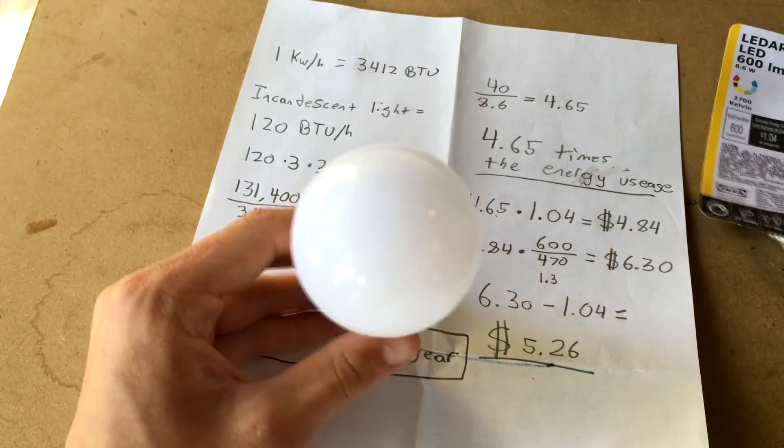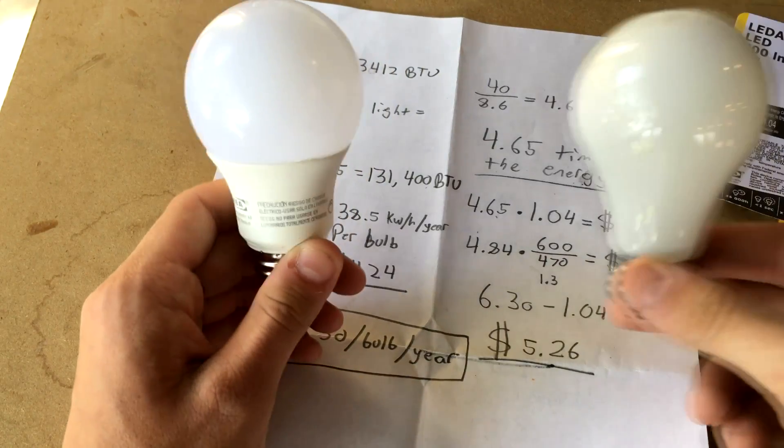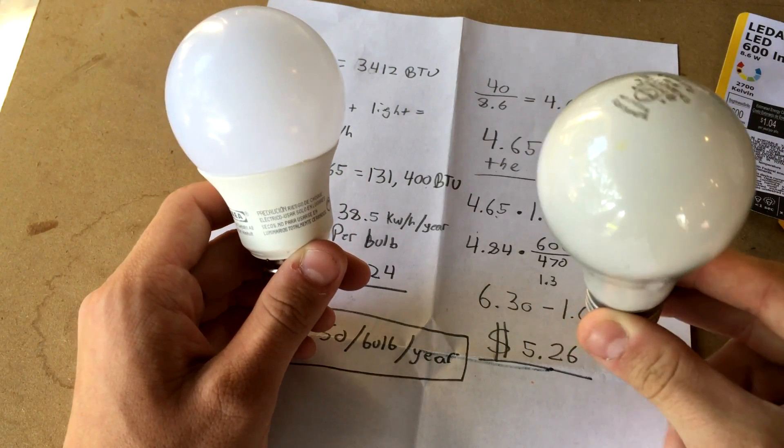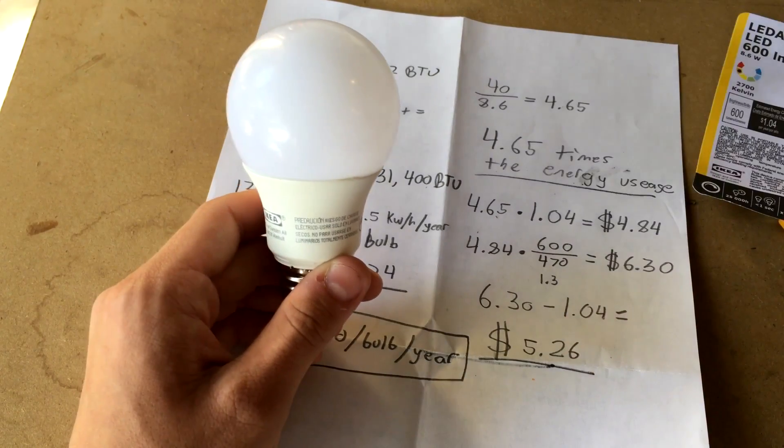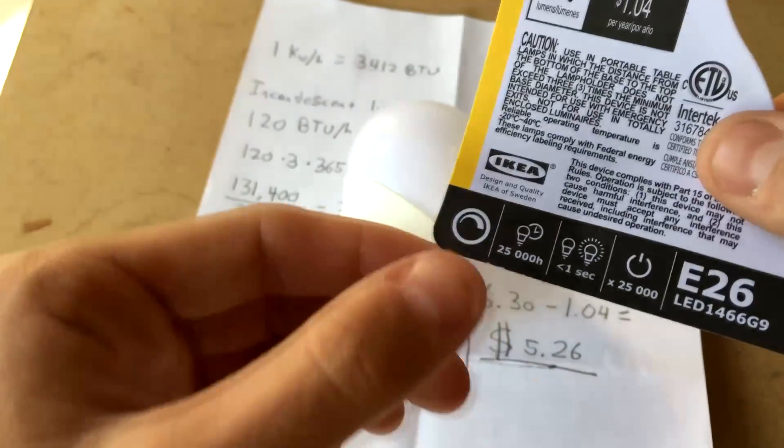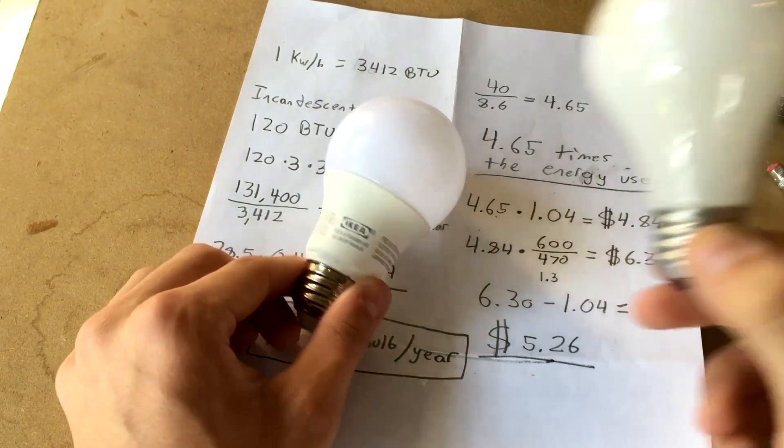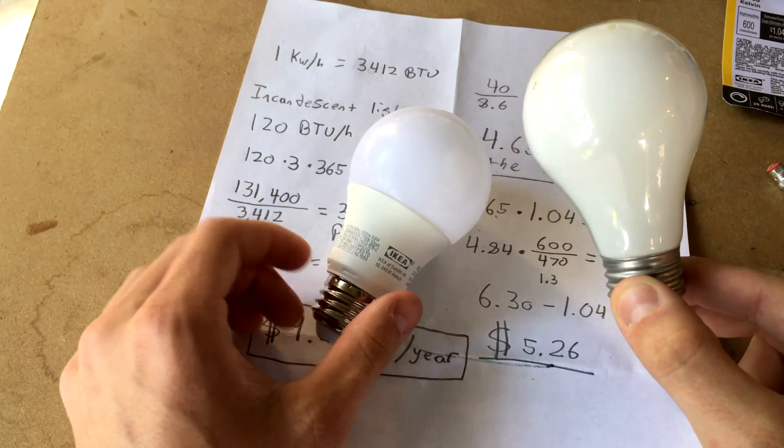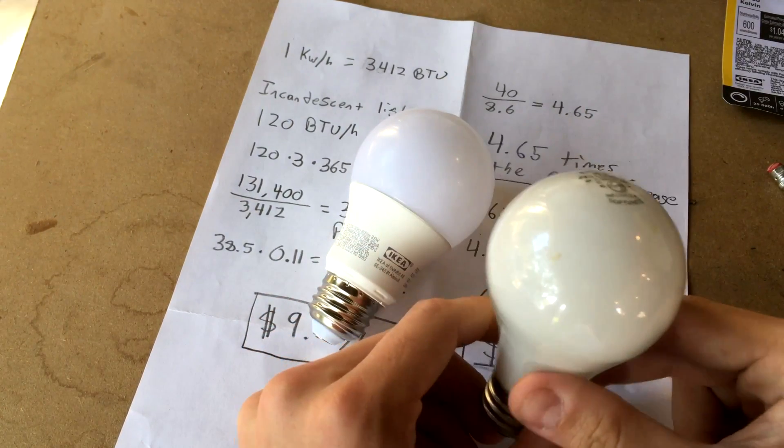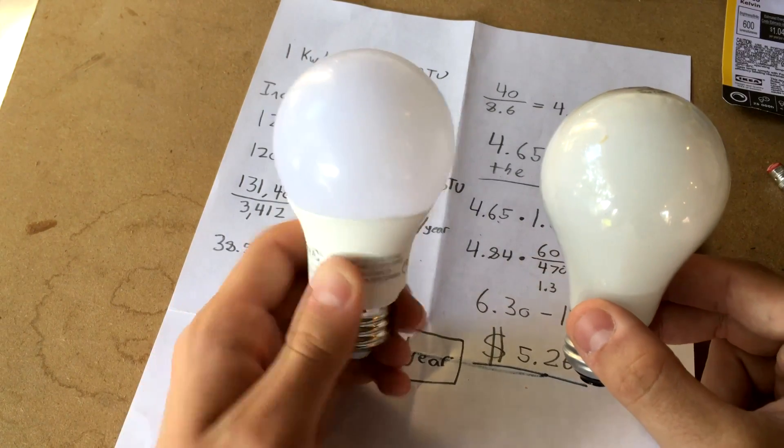I think I paid about $2.60 for this light bulb right here, and although these incandescent light bulbs are a lot cheaper, you have to replace them much more often. If you look over here on the packaging, you can see that they're rated for 25,000 hours. So even if this light bulb only cost a dollar, we know we'd have to replace it at least two and a half times before this LED light bulb would go out.